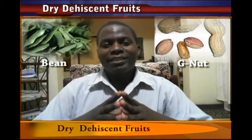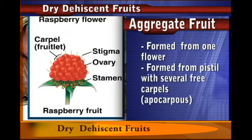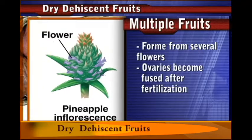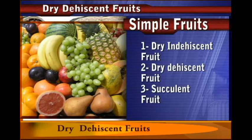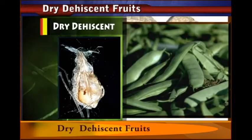Welcome once again to this session where we are going to discuss the dry dehiscent fruits. We have previously talked about the different groups of fruits — simple fruits, aggregate fruits, and multiple fruits. Now we are looking at simple fruits, which are subdivided into three groups: dry indehiscent fruits, dry dehiscent fruits, and succulent fruits. We have discussed the dry indehiscent fruits and now we will discuss the dry dehiscent fruits.